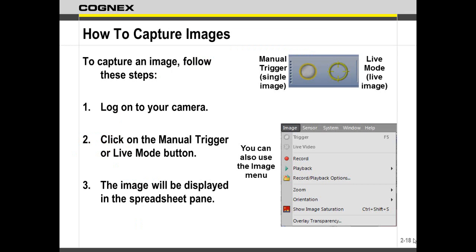So how do we capture an image? Up on our buttons we have a manual acquisition — a one-shot acquisition, much like your digital camera hitting click. Otherwise, we have live mode, which does a pseudo-acquisition, constantly acquiring. Live mode is where you set up your lighting and, if you're using a C-mount lens, adjust aperture and focal length. You can also access this under Image > Trigger and Live Image. With spreadsheet mode, you can go into live mode whenever you want as long as you're offline.